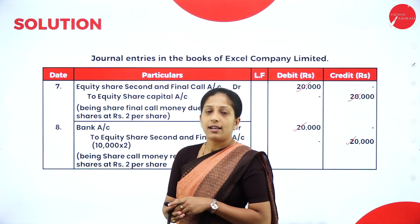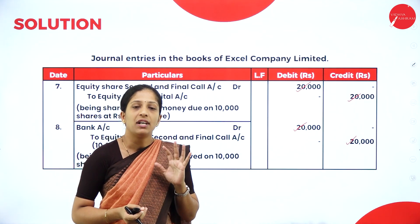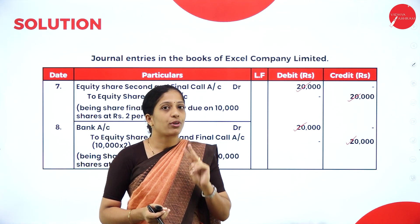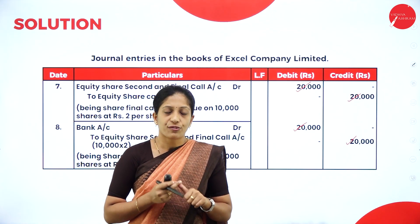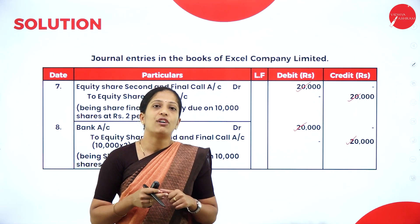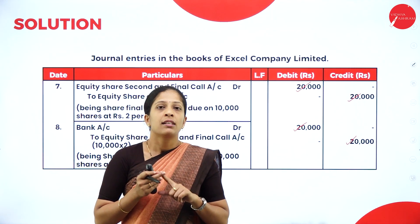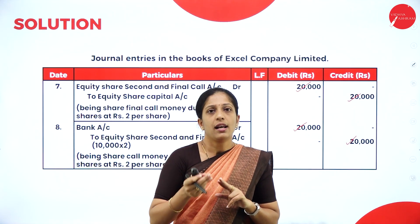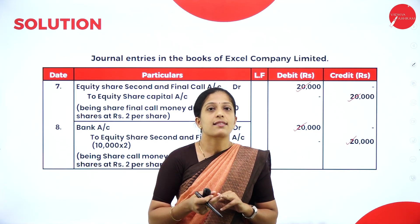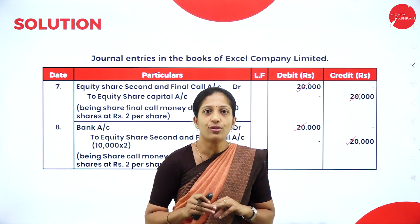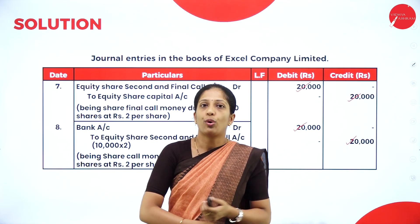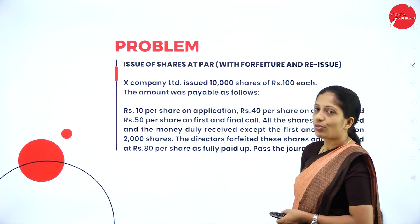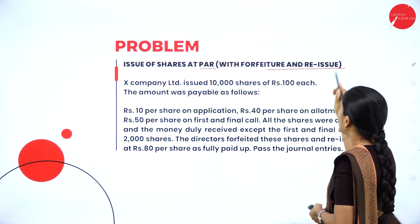So to summarize: there are four stages — application, allotment, first call, and second and final call — and under each stage you record two entries. First situation: receiving of application money and transfer of application money. Allotment stage: allotment money due and allotment money received. First call: first call money due and first call money received. Second and final call: second and final call money due and received. Now moving on to the next problem, which involves issue of shares at par with forfeiture and reissue.